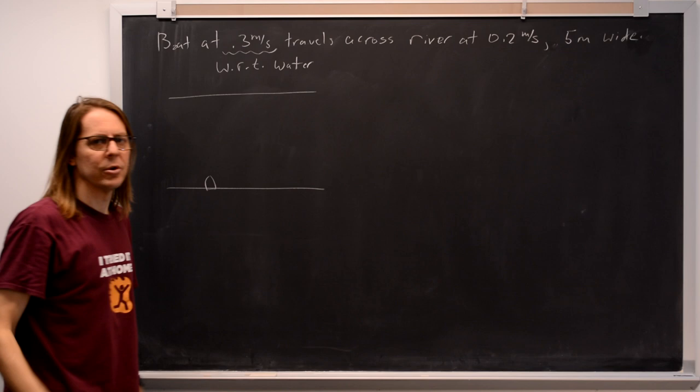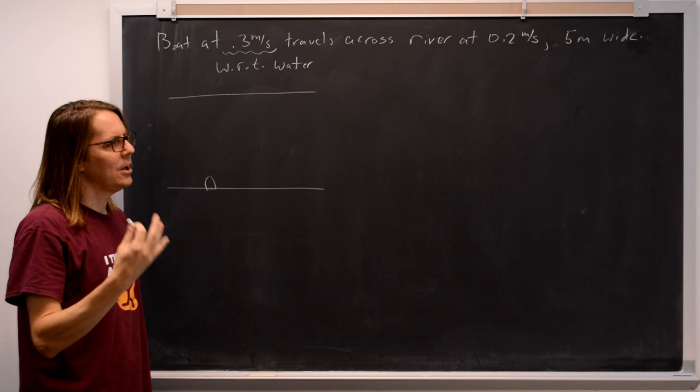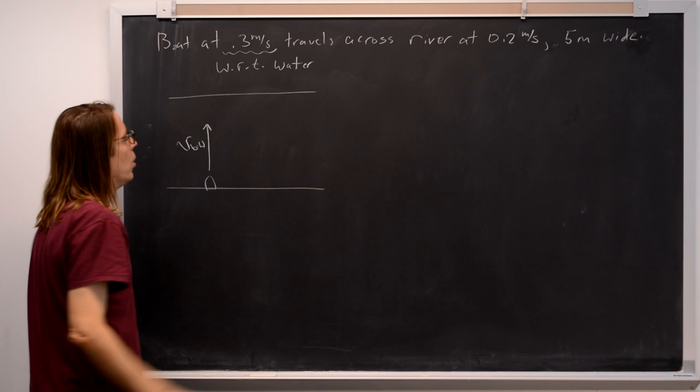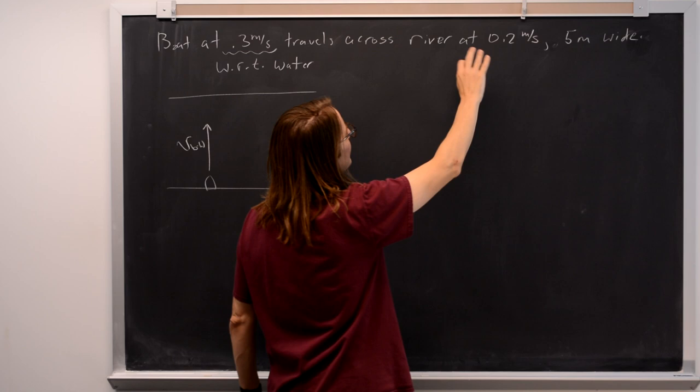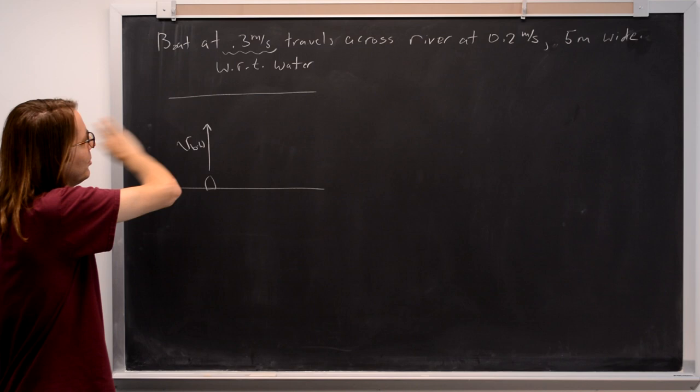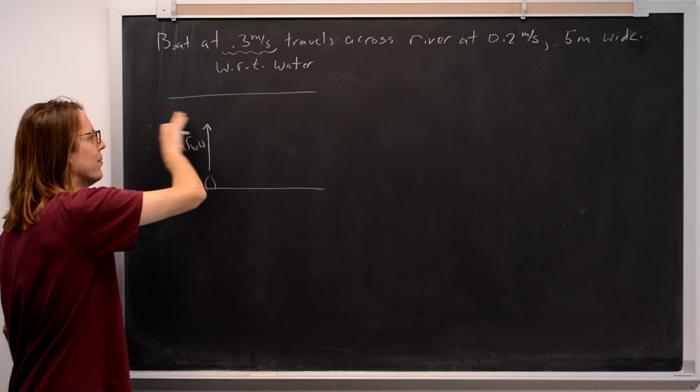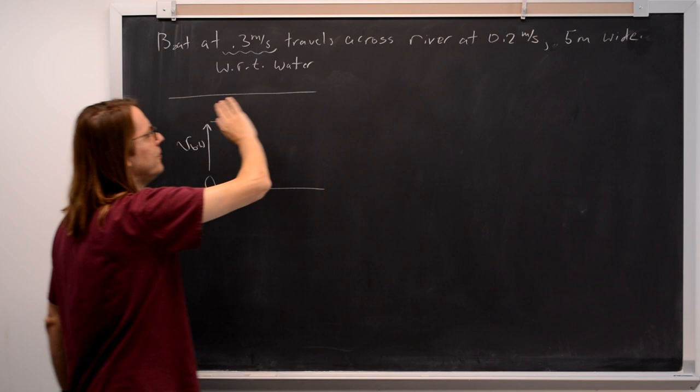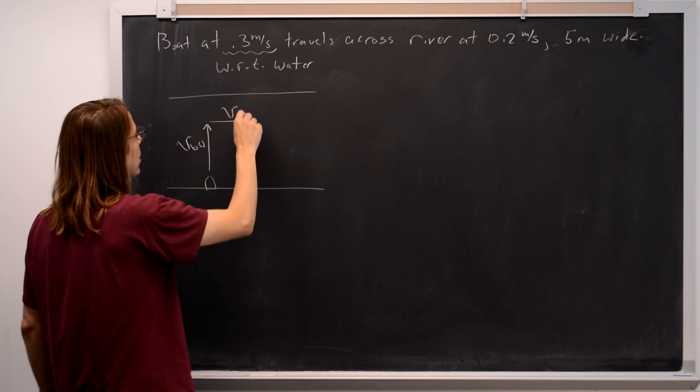So if we were going to give these vectors names, the boat is just going to take off like this, and we'll call that the velocity of the boat in the water's reference frame. The other velocity we have is 0.2 meters per second, that's the water flowing down the river, perpendicular to the direction the boat is trying to go. We could label that the velocity of the water in the land frame.